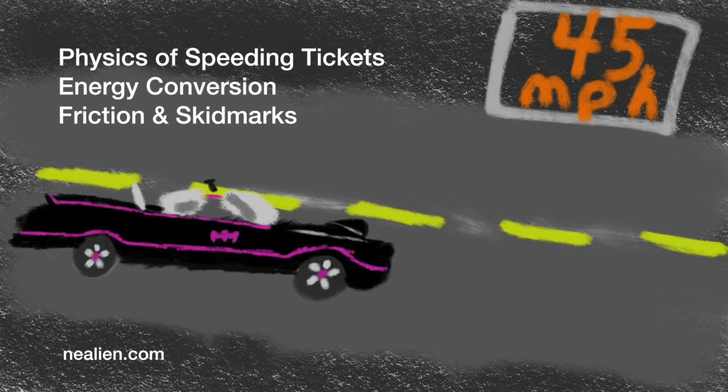We're going to look at energy conversion, friction, and skid marks, and figure out how we can derive the velocity using the length of the skid marks and the coefficient of friction.